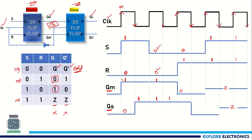What we need to understand is that at the positive edge of the clock we expect the change from the master. At the negative edge of the main clock the slave changes its value, and QM serves as the input for the slave. So when QM is 1 (S=1 for the slave) it changes to 1 at the negative edge; when S=0 and R=1 QS changes to 0; and when the unknown state is the input, the slave output becomes indeterminate. This is how we understand master-slave behavior — here I have taken SR flip-flop as an example, but any flip-flop can act as master-slave in the same way. Thank you.